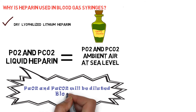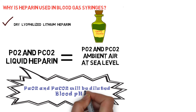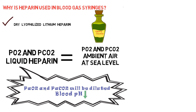High concentrations of heparin are acidic with a pH of less than 7 and lower the pH of the sample. If liquid heparin is used, its effects can be minimized by using only enough to fill the dead volume of the needle and syringe.